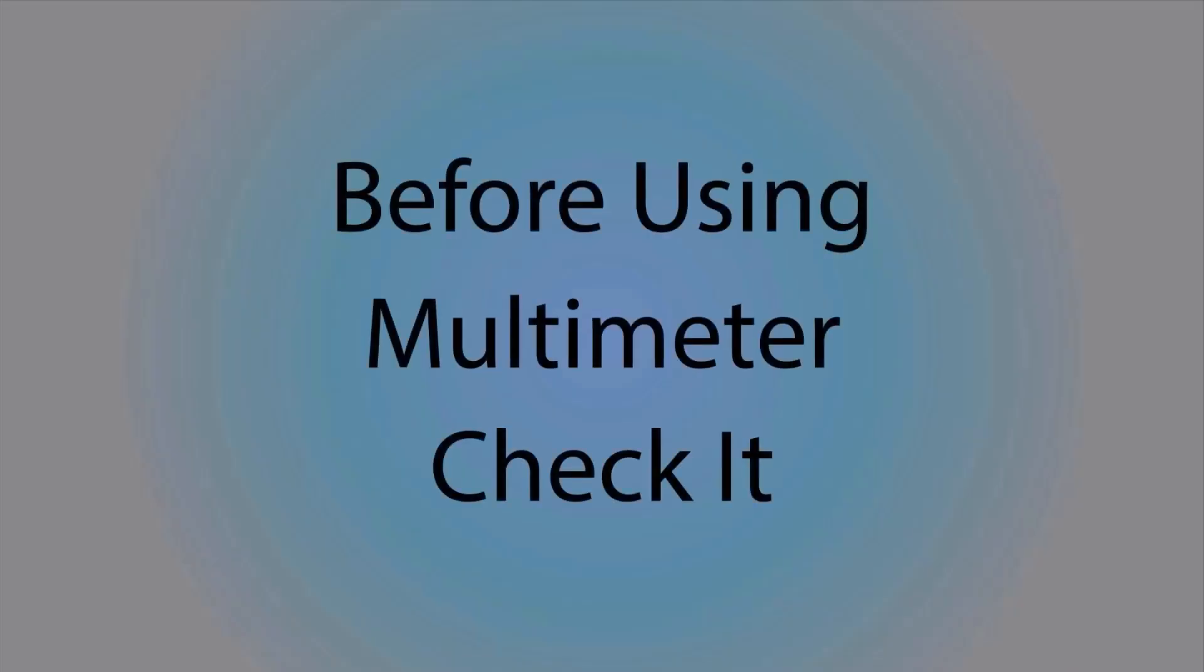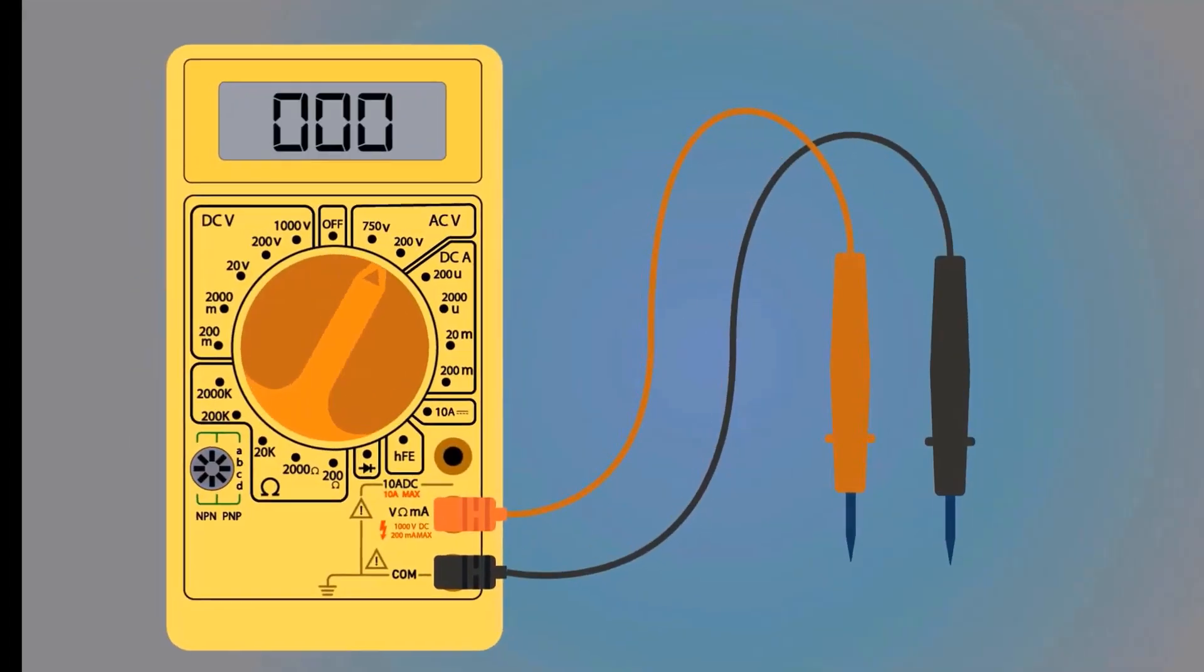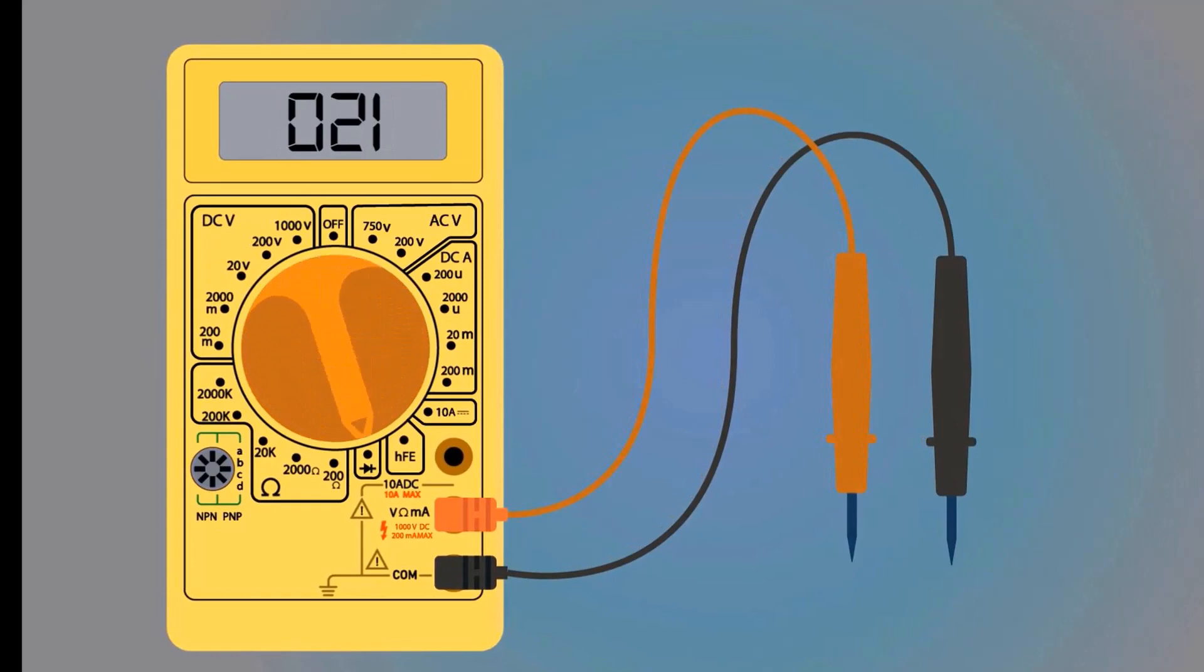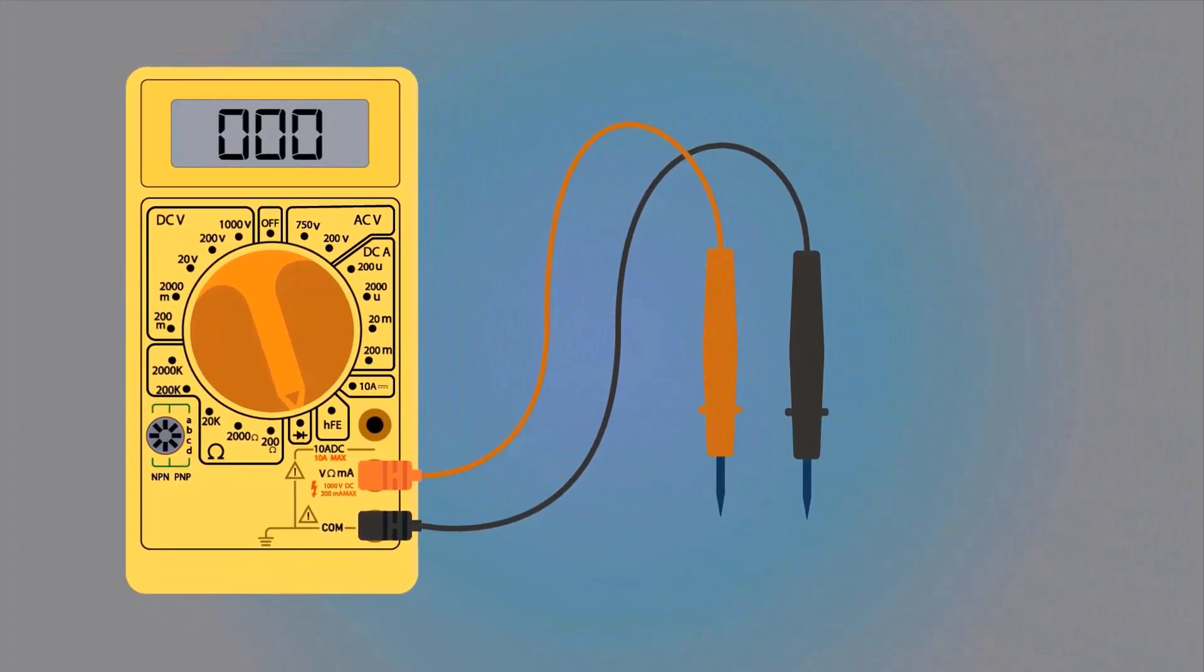Before using a multimeter, check whether it is working or not. Take a multimeter, move the selector switch to continuity. Short both probes. When negative and positive terminals meet, the multimeter will produce sound. This means the multimeter is okay and ready for use.